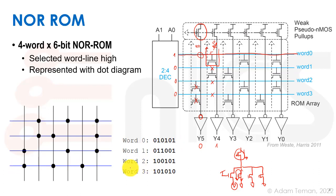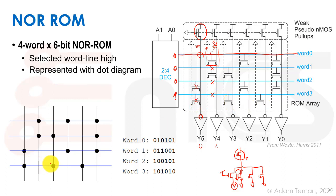The question was about word number three, address 11, selected when we have 0, 0, 0, 1 turning on word line three. Wherever we have a transistor (shown in the dot diagram) we get a 1, giving us 1, 0, 1, 0, 1, 0. That is the answer to our Kahoot.